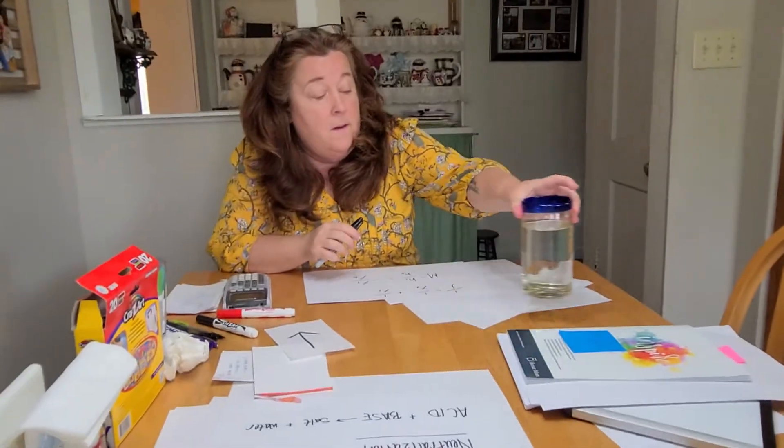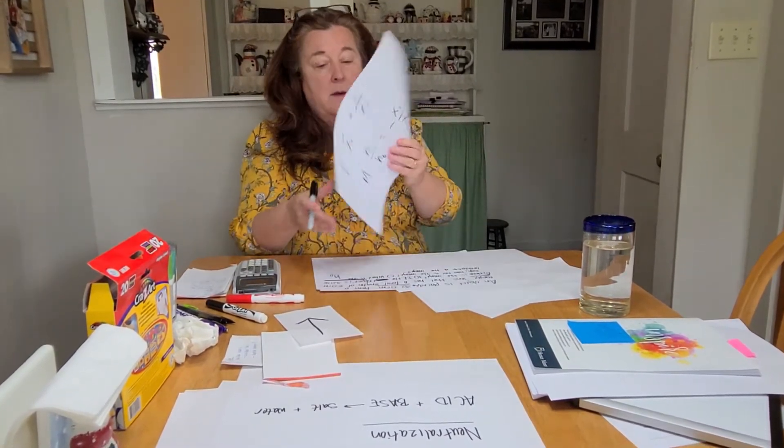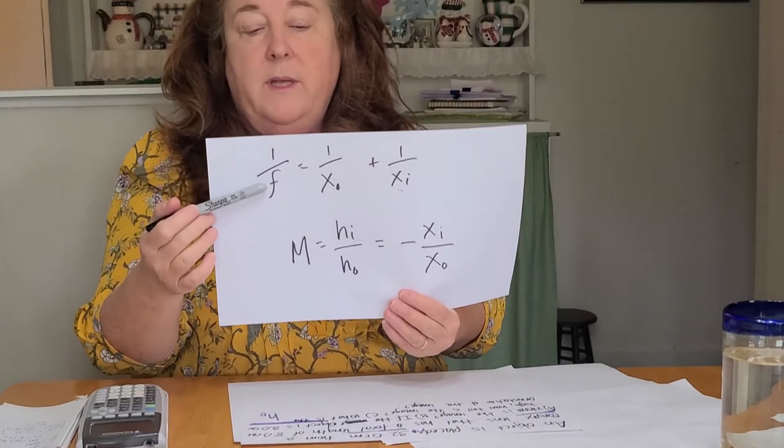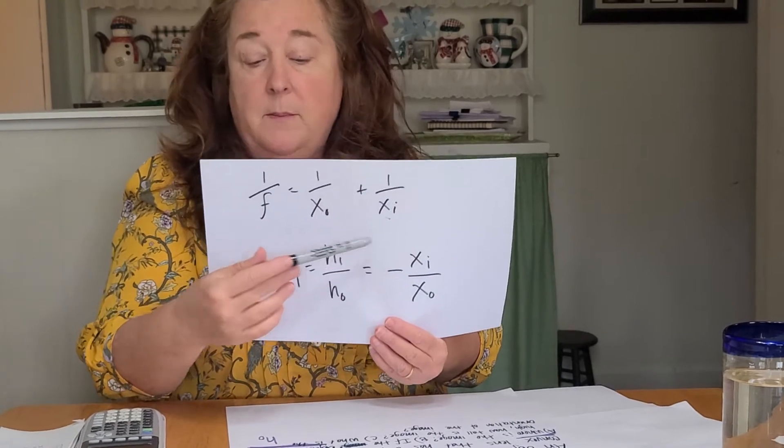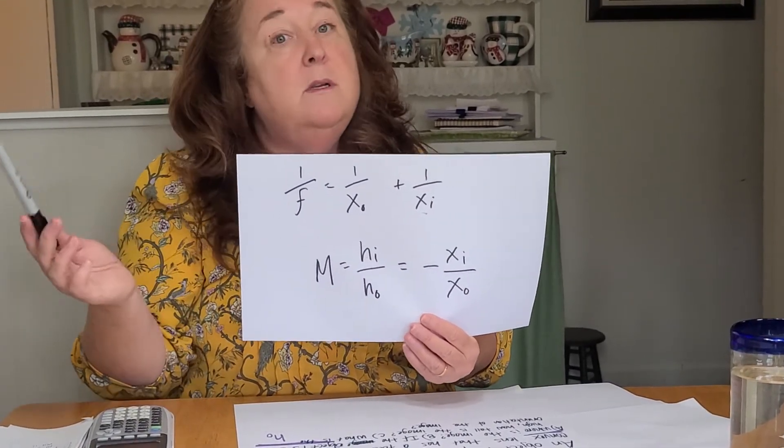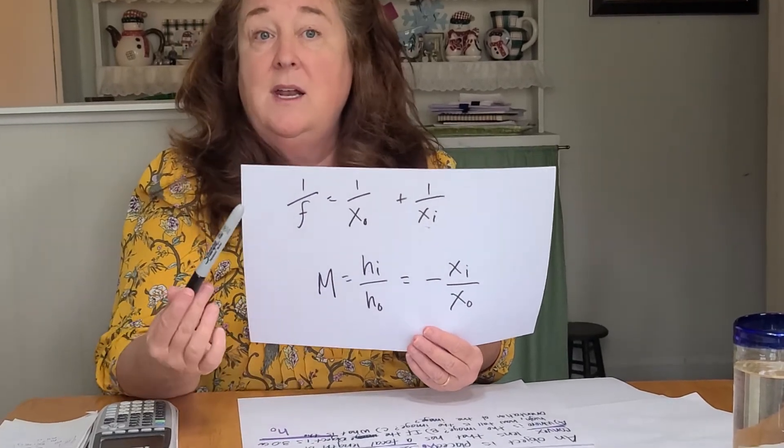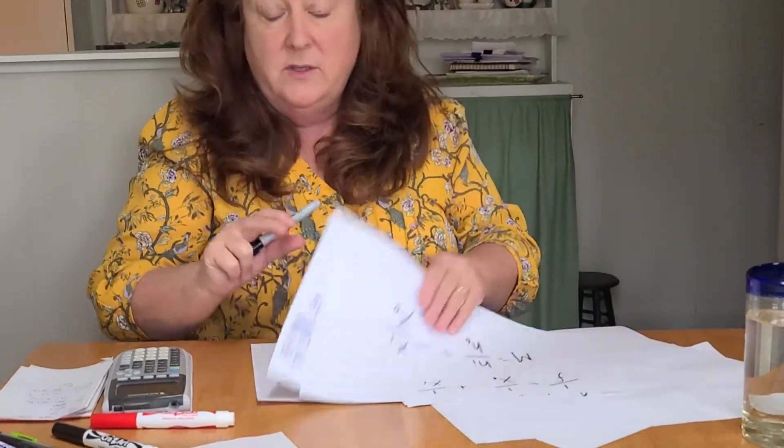Now we're going to do the math. I have made up a sample problem and I'm going to try to do the math correctly this time. These equations show F is the focal length, XO is where the object is located, and XI is where the image shows up. M is the magnification. The negative means it's either going to be right side up or upside down or inverted.